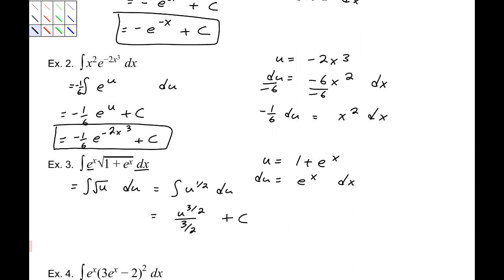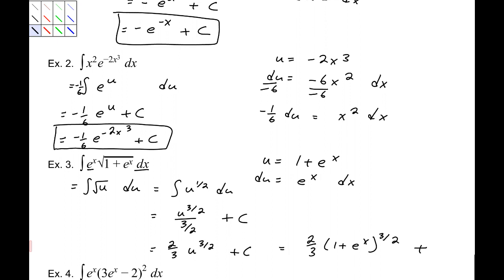Now I'm going to rewrite this a couple of times. First, I'm going to write this as 2/3 u to the 3/2. And then last, I'm going to replace my u. So this is 2/3 times (1 plus e to the x) to the 3/2 plus c.